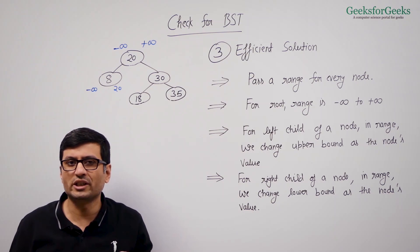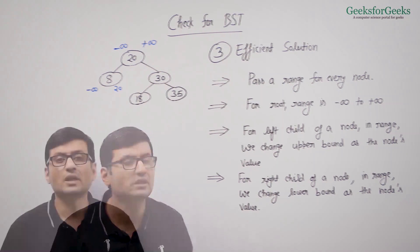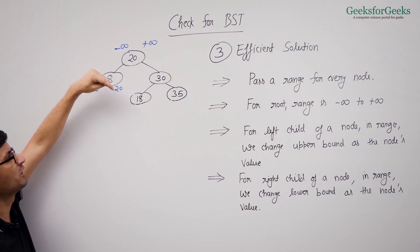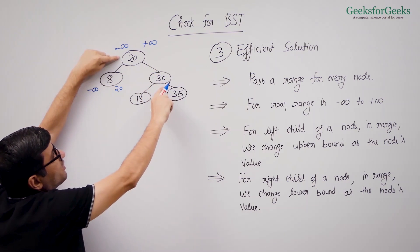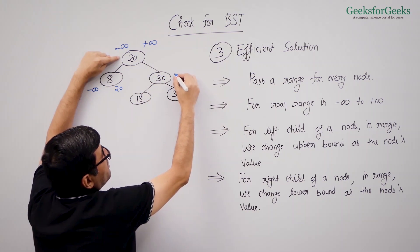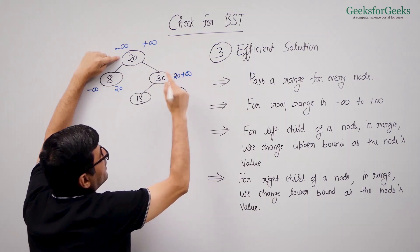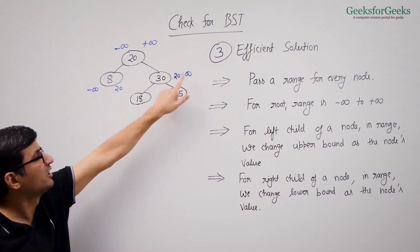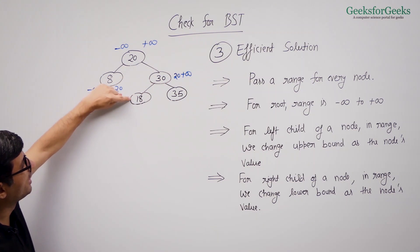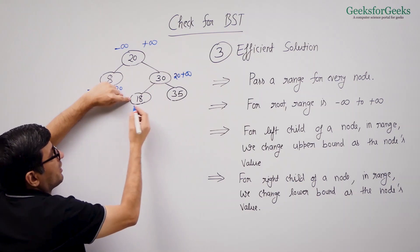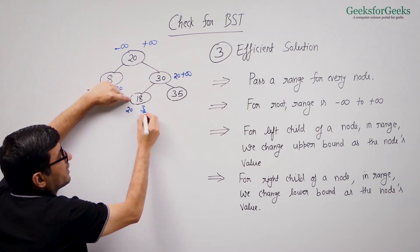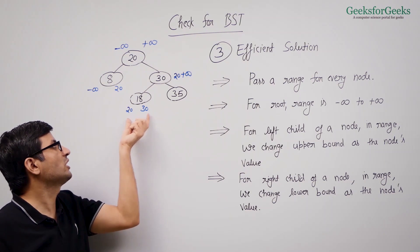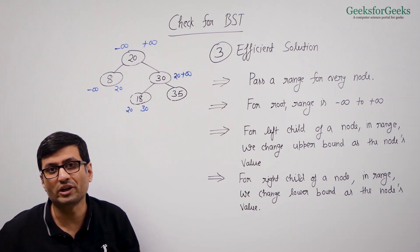In BST we consider only distinct values — if there are equal values we say it's not a BST. So when we go to the right child of 20, we change the lower bound to 20, giving a range of 20 to plus infinity. Node 30 falls within this range. When we go to the left of 30, we change the upper bound, giving a range of 20 to 30. Node 18 is not in the range 20 to 30, so we return false and conclude it is not a BST.